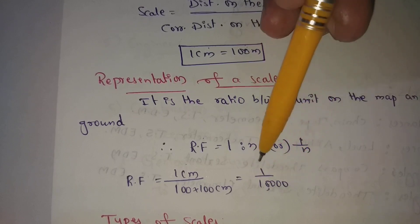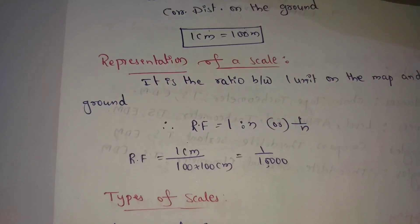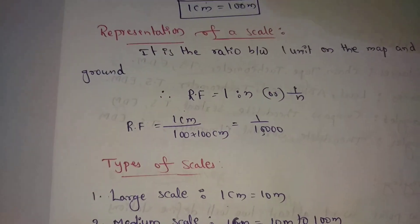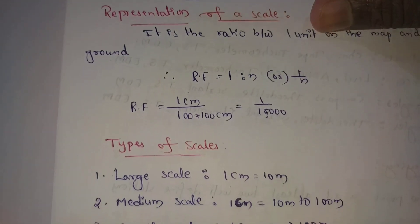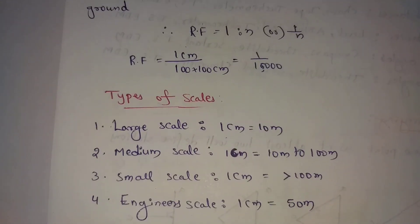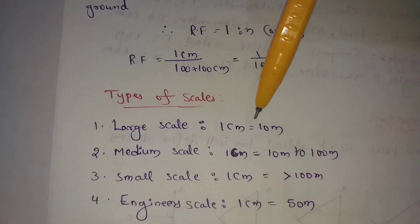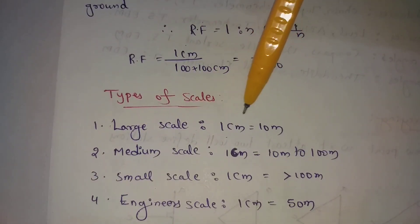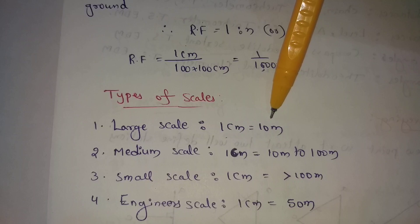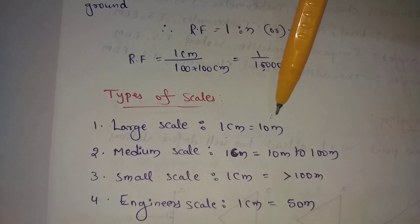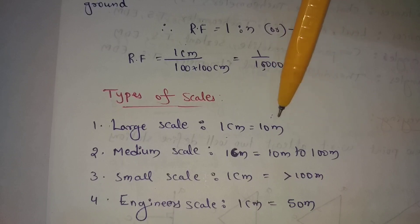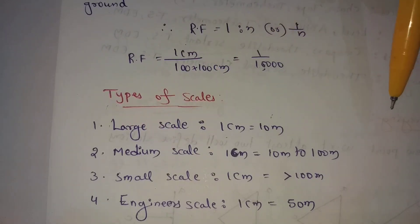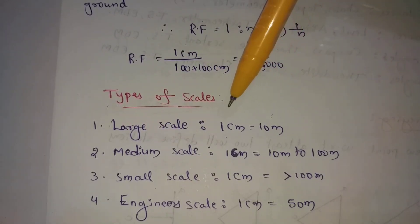Now we return to the types of scales. First, large scale. A large scale value is equal to 10 meters, where the RF value is equal to 1:1000. So when RF is 1:1000, that is a large scale.